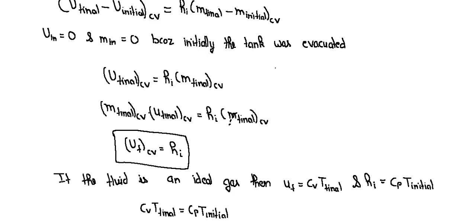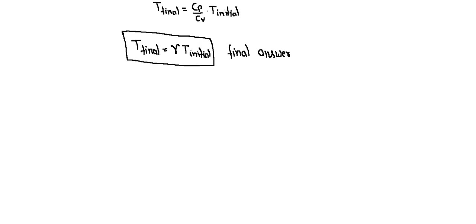We know from the fundamental concepts uf equals Cv into T final and hi equals Cp into T initial. After putting all these values we will get Cv into T final equals Cp into T initial.